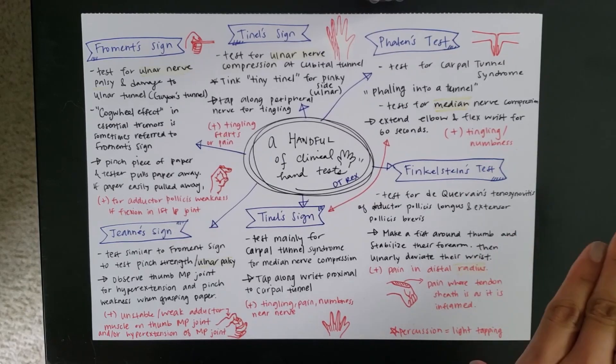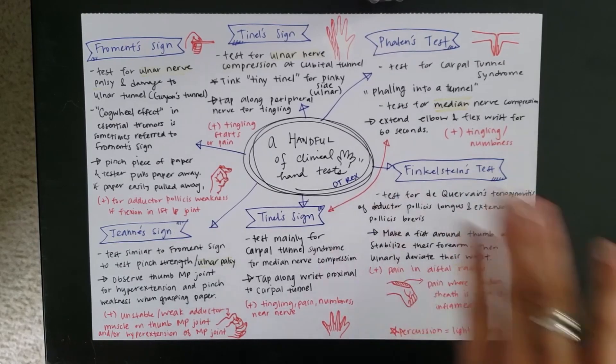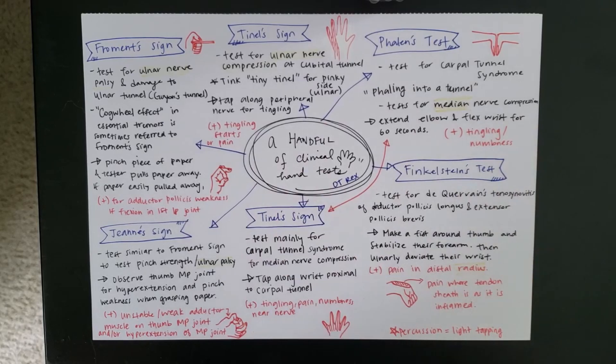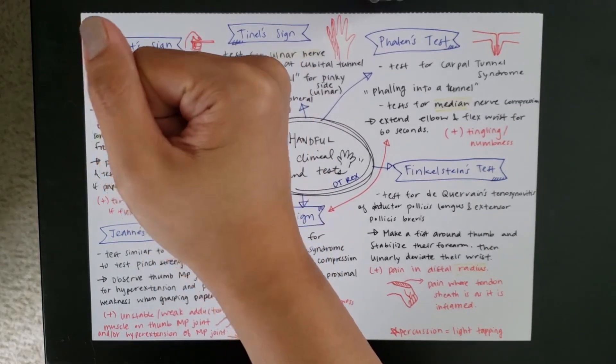Let's start off with the Finkelstein's test over here. I'm starting here first because it's sort of a standalone compared to the other ones and you'll see what I mean by that. So, the Finkelstein's test is a test for De Quervain's tenosynovitis of the abductor pollicis longus and extensor pollicis brevis. So, that is a mouthful. But the way you test this is really easy.